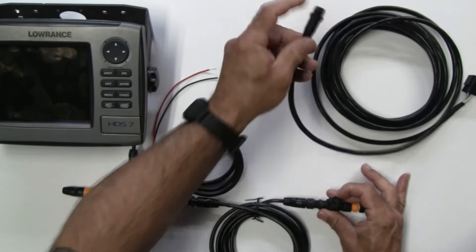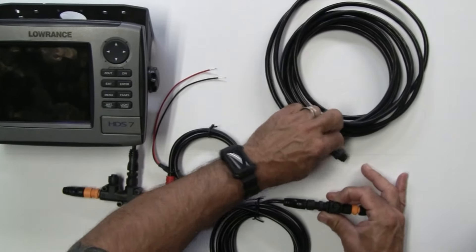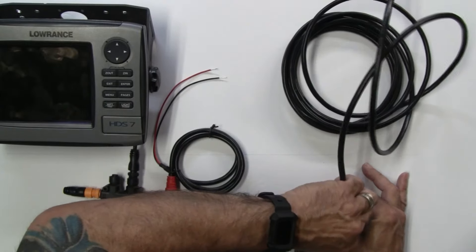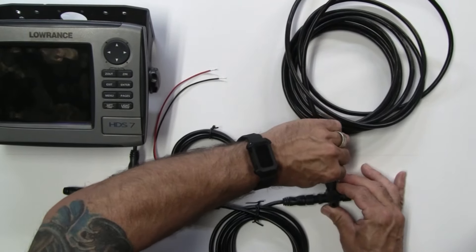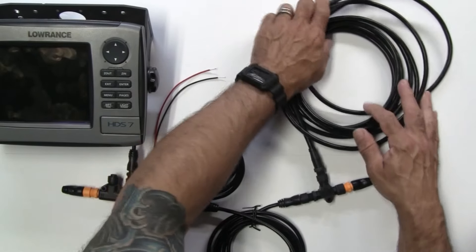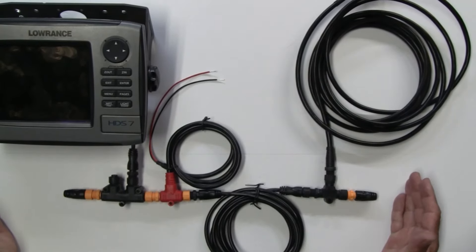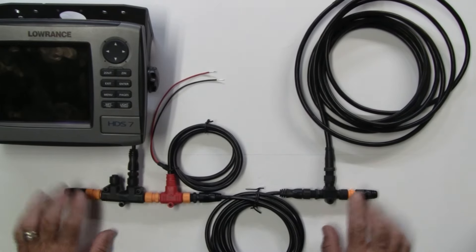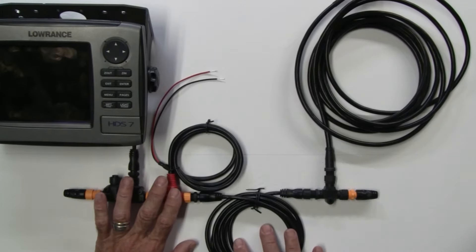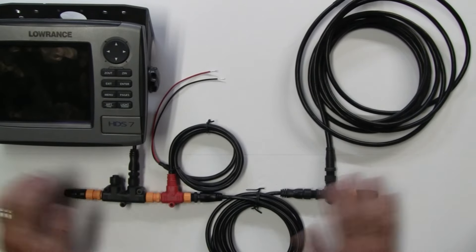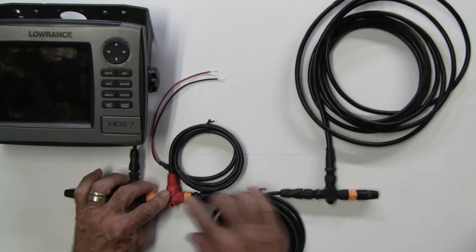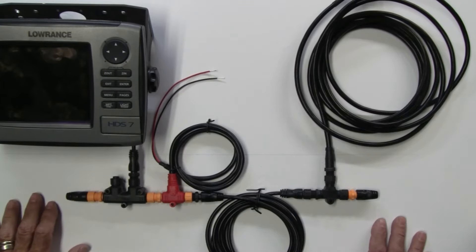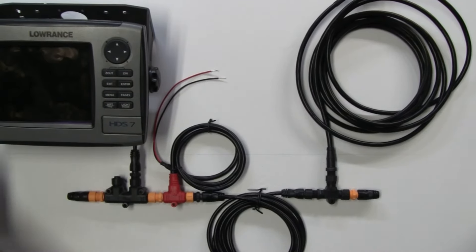So what we have here now on the tabletop is a NMEA 2k network: terminators, tees, power feed, bus cable, if you will. Although when I implement this in my boat, these are going to be connected directly to each other. This will be used as a drop cable to another device, but again it's a pretty handy way to get everything set up.